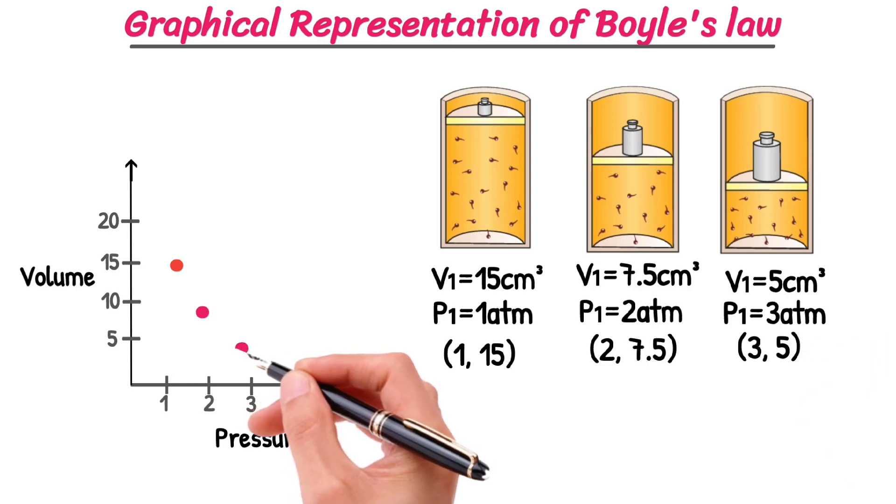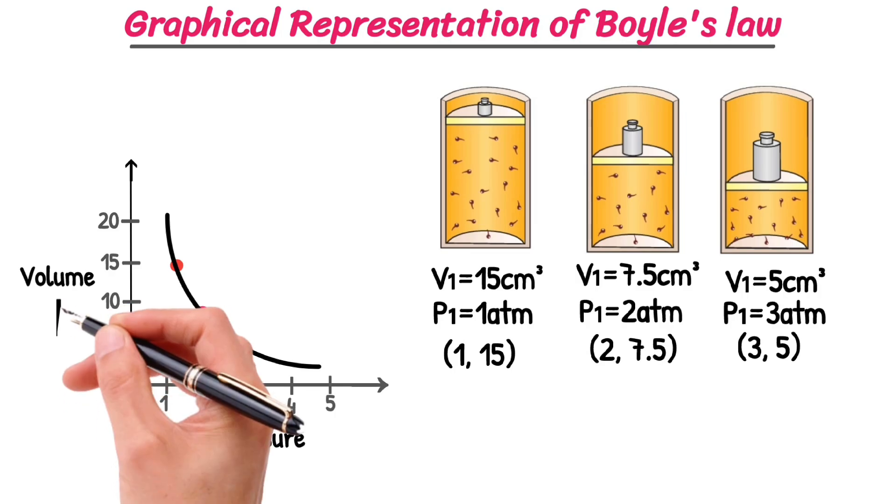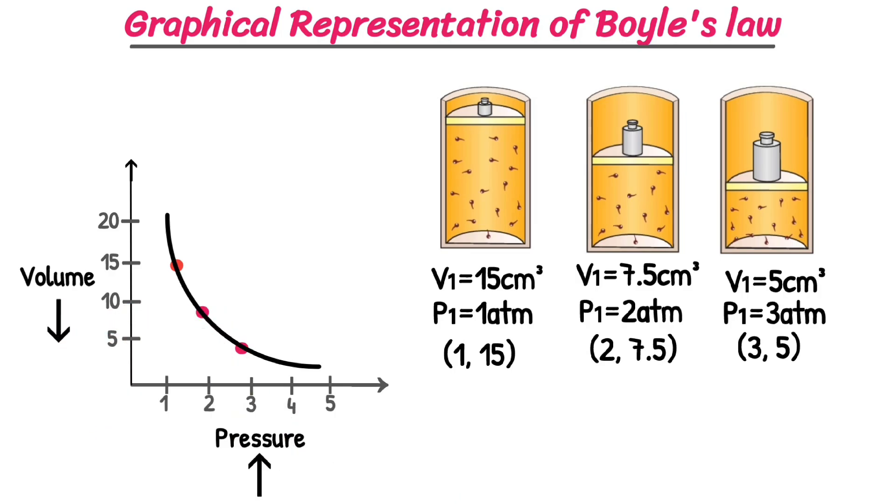When we connect all these points, we see a downward curve. This is Boyle's law, showing that as volume decreases, pressure increases.